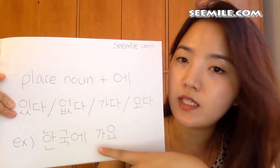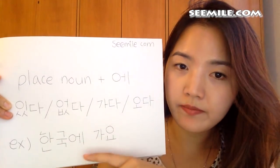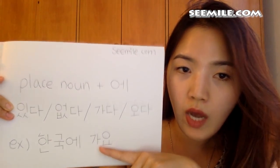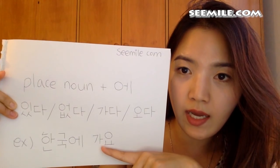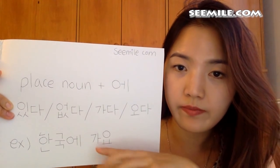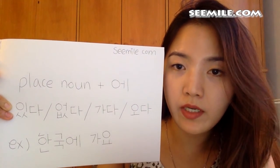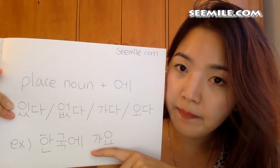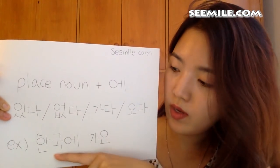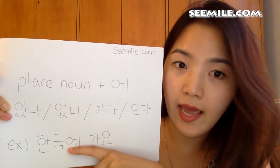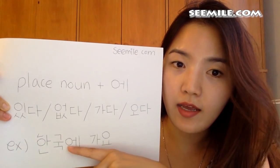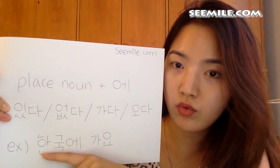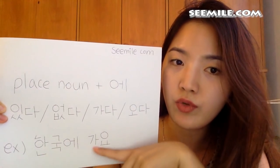I prepared one example here: 한국에 가요. Which means, I'm going to Korea. 가요 comes from 가다. So here, with 에, you can see the destination is 한국 — 한국에 가요.